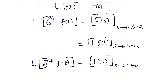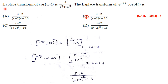Based on this shifting property, we will solve a previous year GATE question. The Laplace transform of cos(ωt) is s divided by (s² + ω²). Now the question is to find the Laplace transform of e^{-2t}·cos(4t).